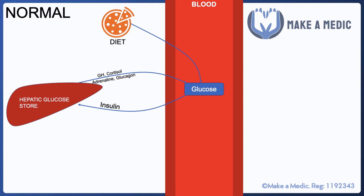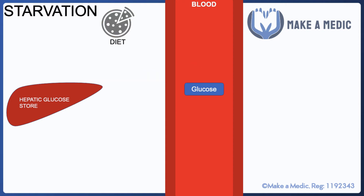In a starved state, if we don't have enough carbohydrate intake to maintain blood glucose levels, those counter-regulatory hormones will liberate glucose mainly from the hepatic glucose store to keep blood glucose within an acceptable range. Furthermore, the muscles in our body are able to use fatty acids as an energy source so they can continue to function.